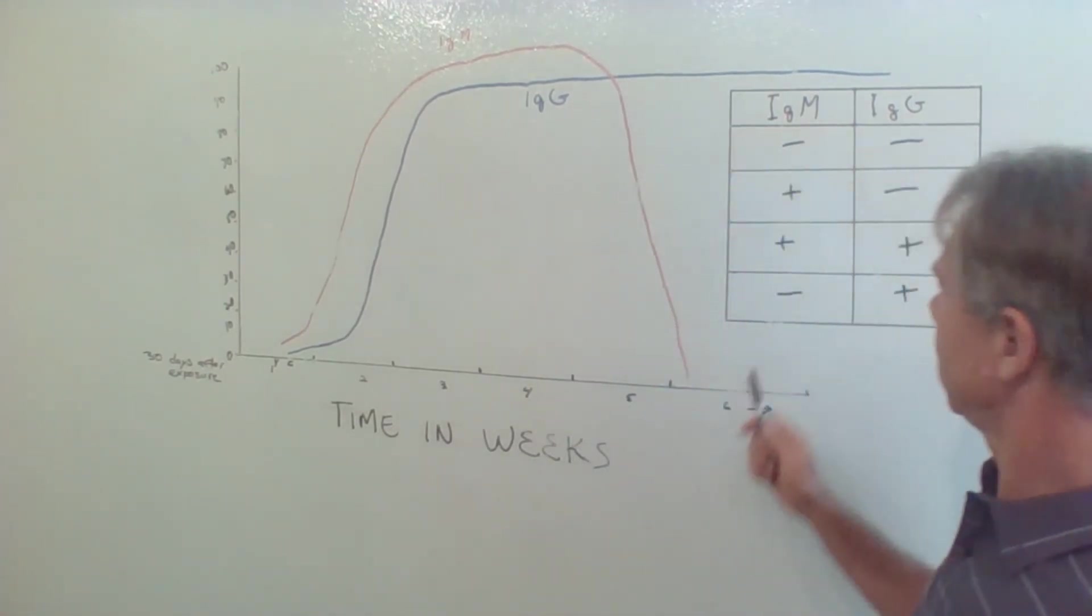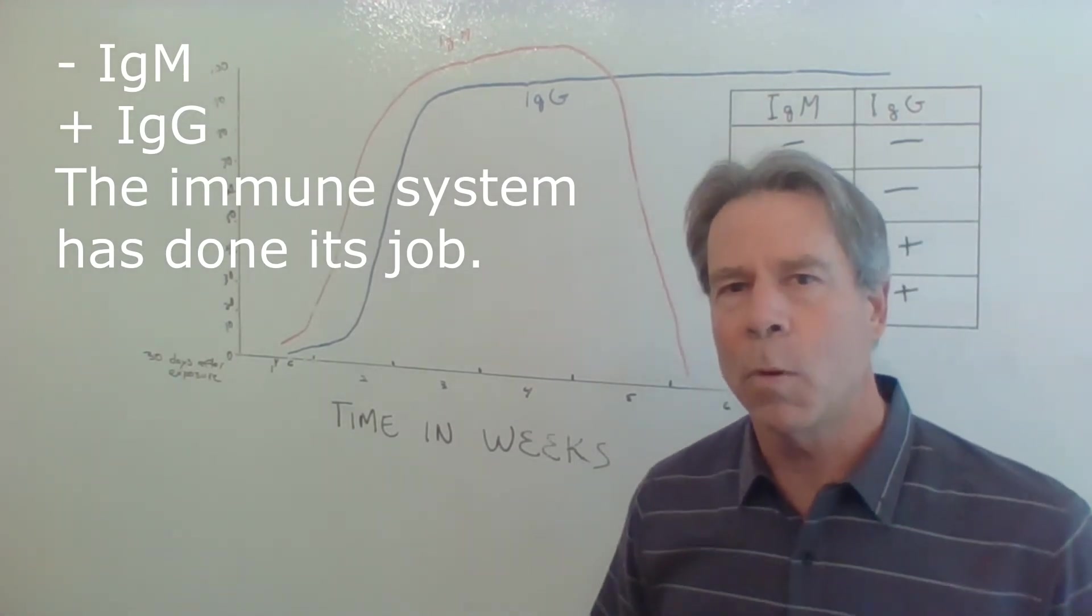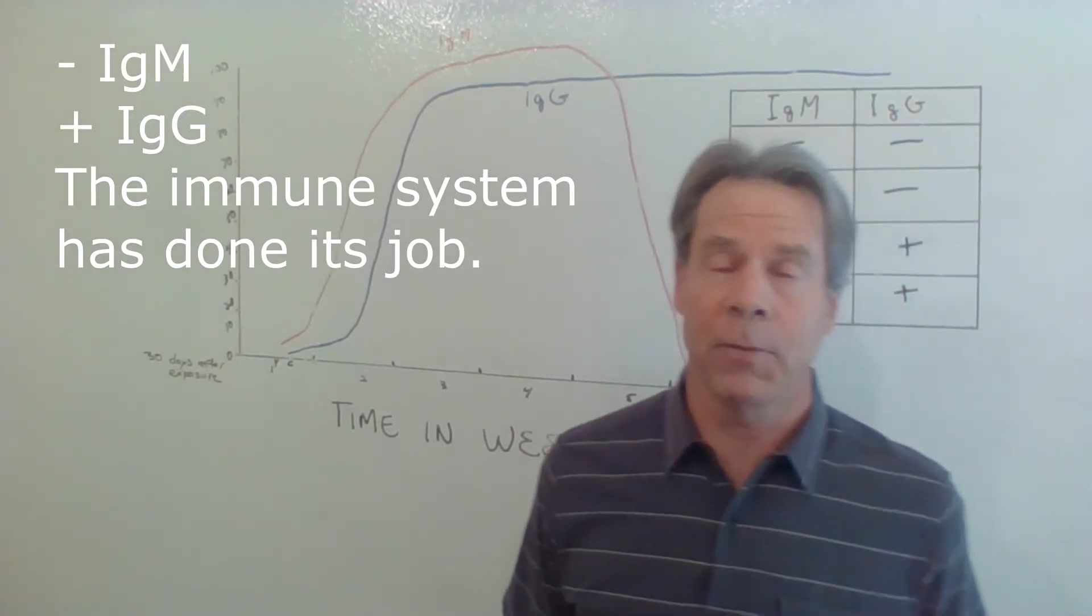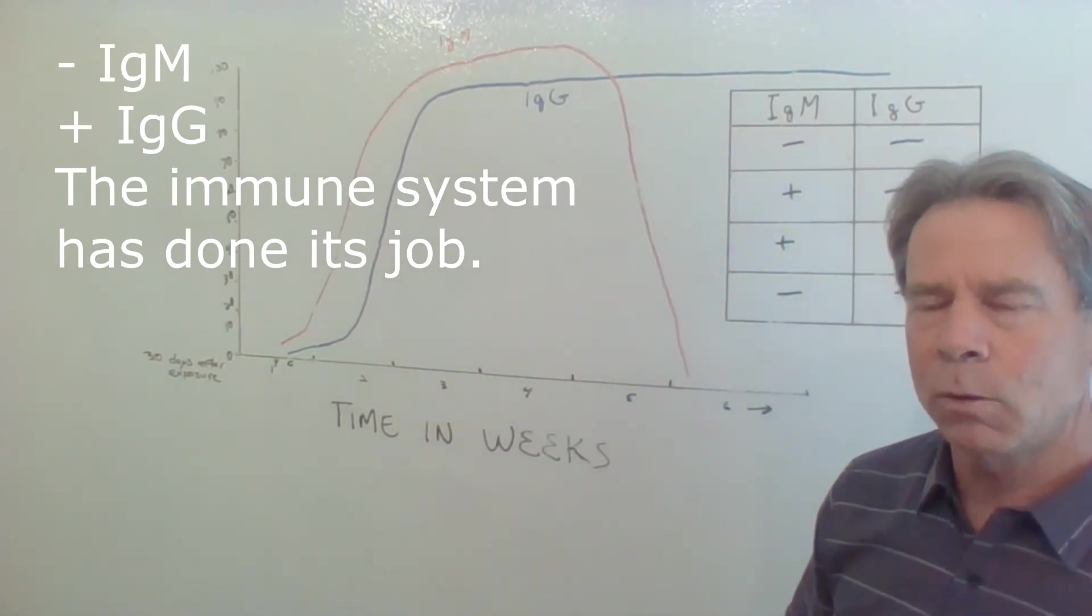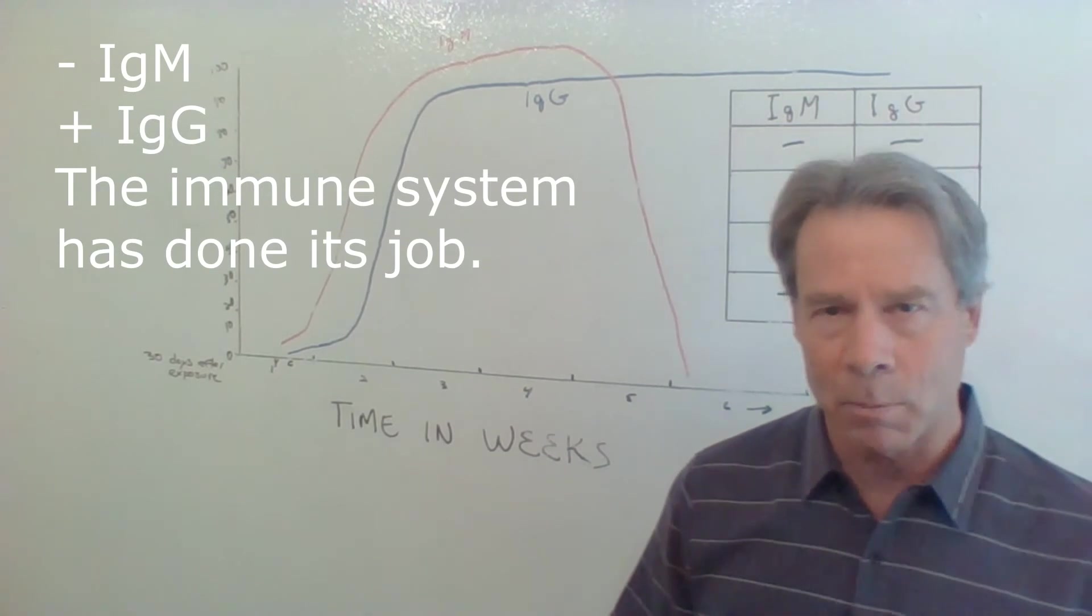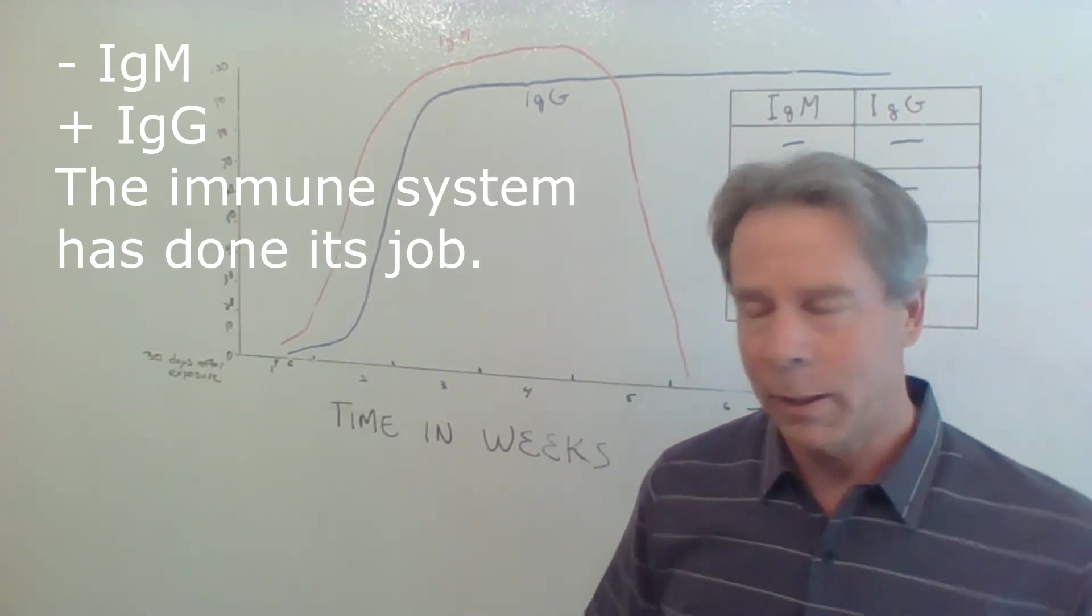The last case scenario then would be the IgM negative and the IgG positive. Now this is what most people really want to know. They want to know if they've had it and they've not had an immune response and it looks as if this immune response is going to be permanent immunity. So those are the four case scenarios.